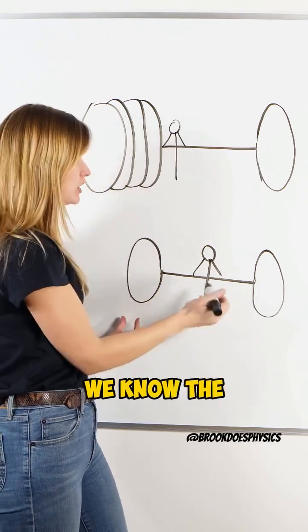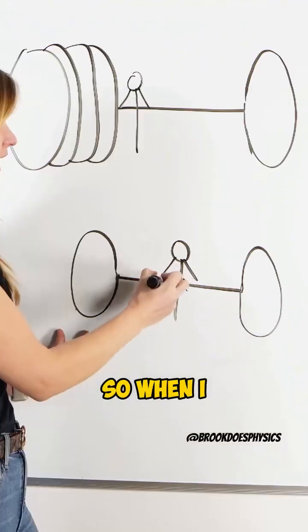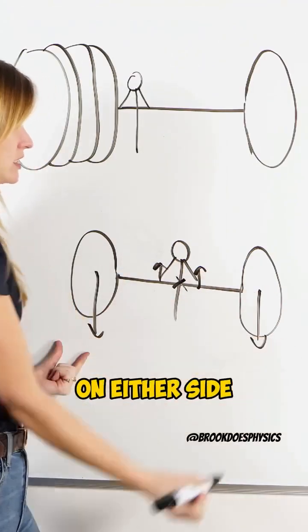Whereas if it was equally weighted, we know the center of mass would be in the middle. So when I use my two hands on either side, and I have my two weights on either side, they all balance so we can lift it up.